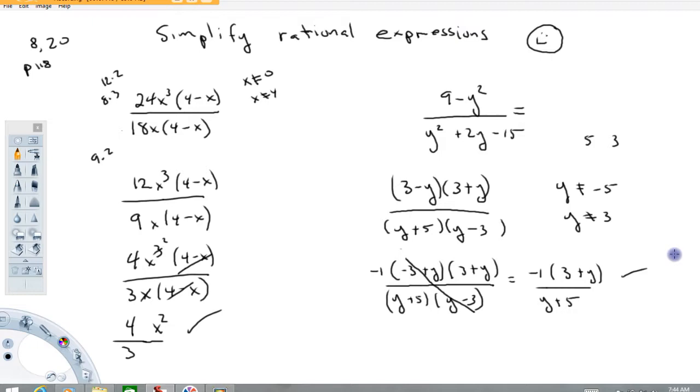And we're left with -1 times (3 + y) over (y + 5). Now this is good enough. I would call that done, but if you want to kind of redistribute this minus sign and call this -(3 + y) over (y + 5), that's perfectly fine. Either of these are acceptable answers.